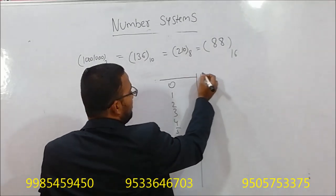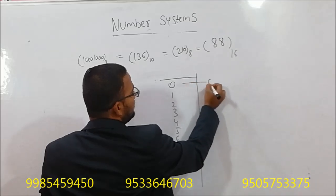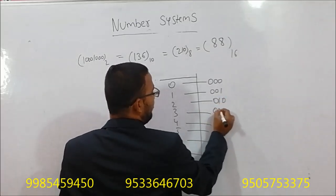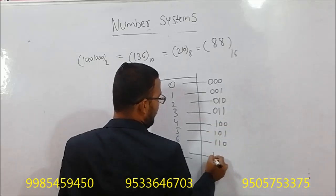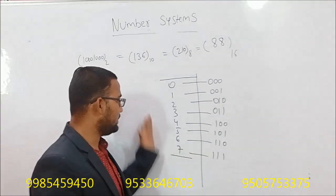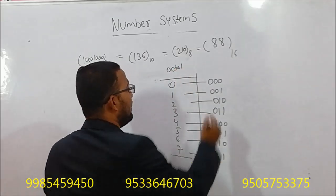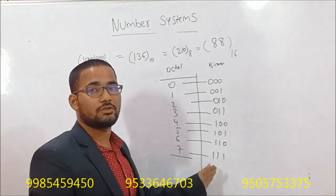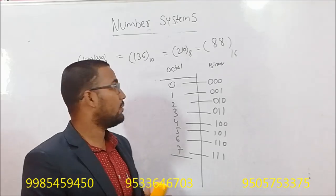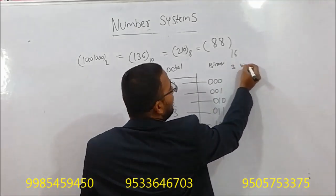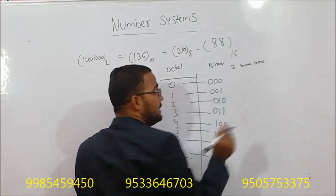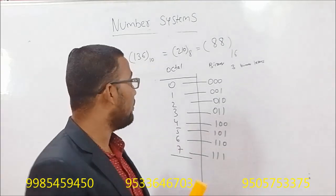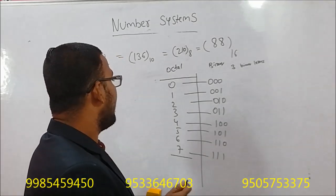We have to talk about equivalent binary values. In the octal system, we represent 0 through 7 in binary format. We have 8 numbers represented in binary format. To do any combinations, we need three binary numbers, because 2 power 3 gives us 8 combinations.